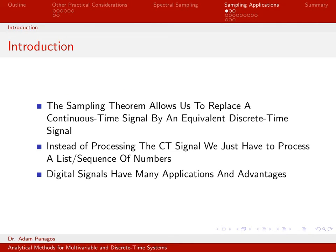Now we have the sampling theorem which allows us to replace a continuous time signal by an equivalent discrete time signal that contains all the information of the original signal. Instead of working with the original continuous time signal, we're going to learn how to equivalently work with and manipulate this discrete time signal. So now we just have to process really what's just a list of numbers.